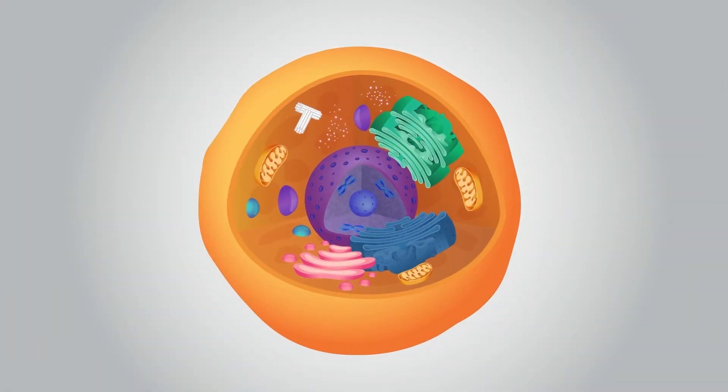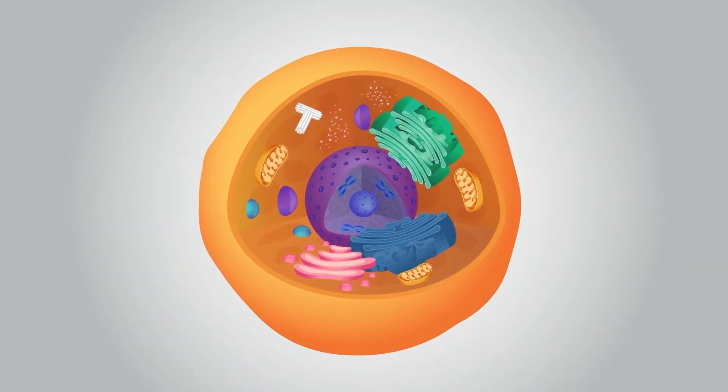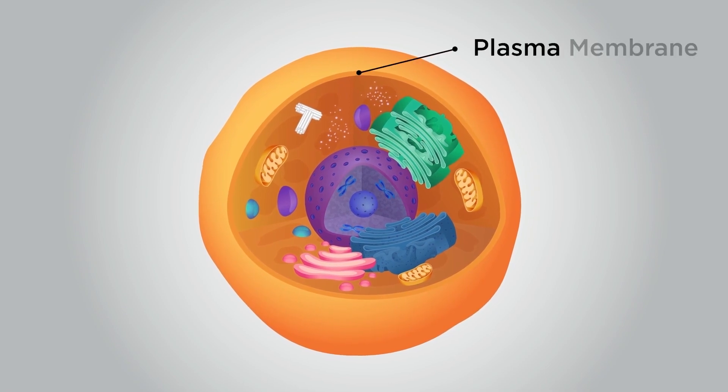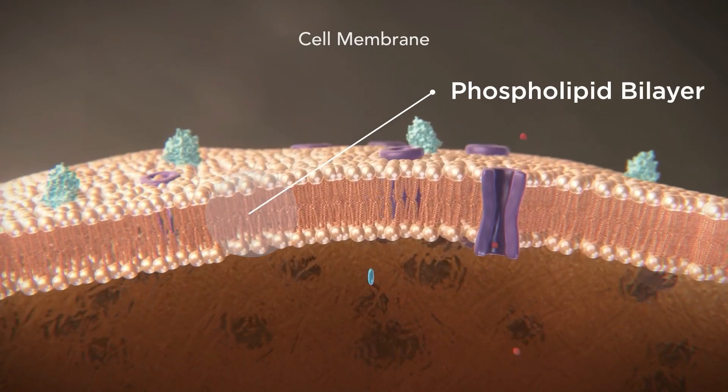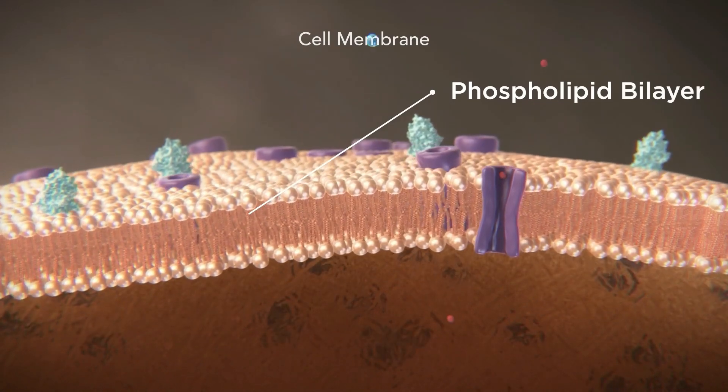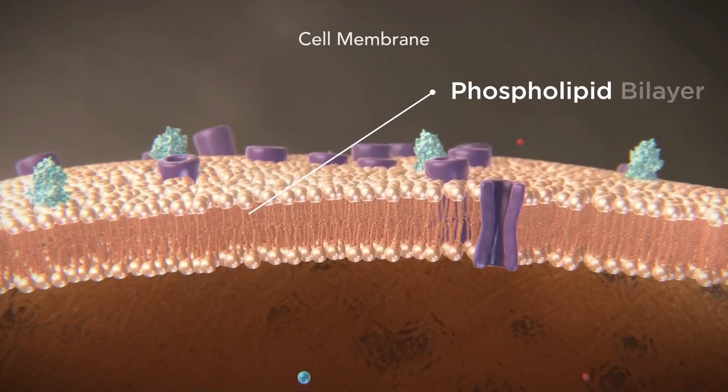If we look at the structure of a typical cell, we can see that it is surrounded by a thin layer called a plasma membrane, which is made of a type of lipid called a phospholipid. This membrane is what holds the cell together and controls the passage of substances in and out of the cell.